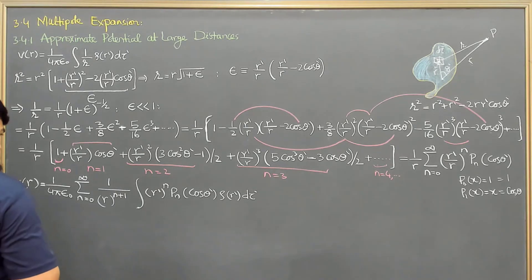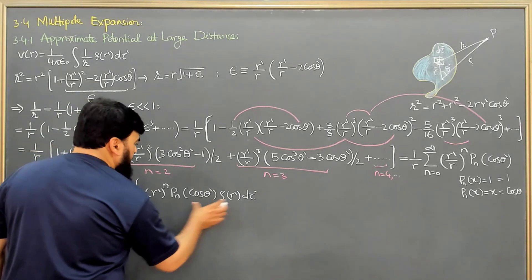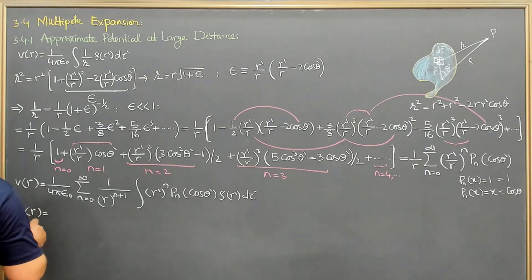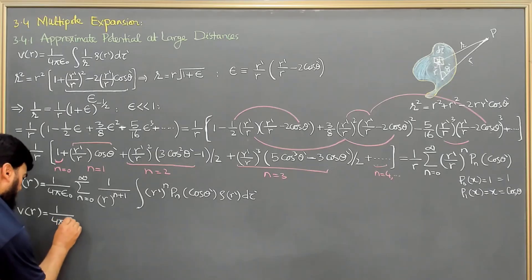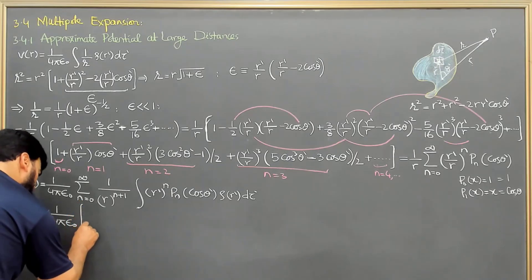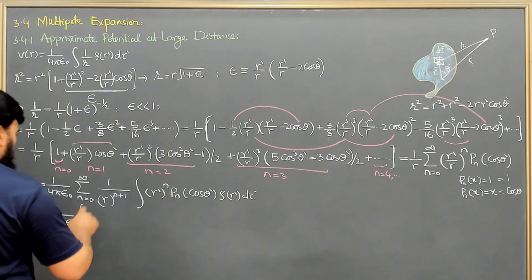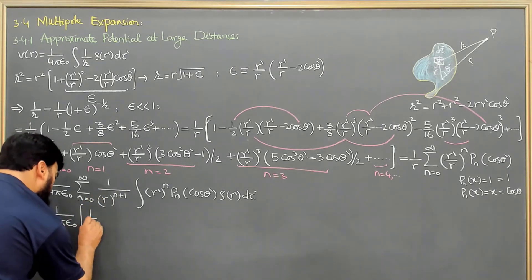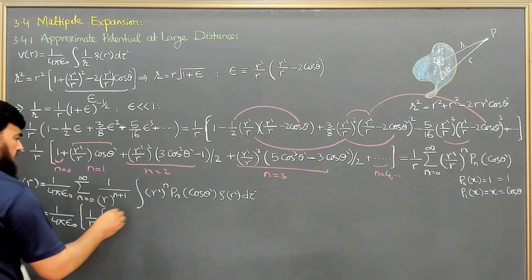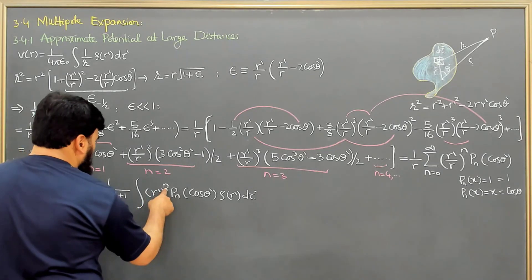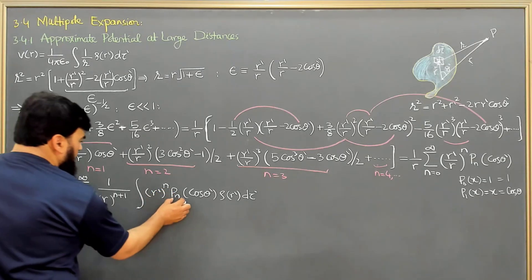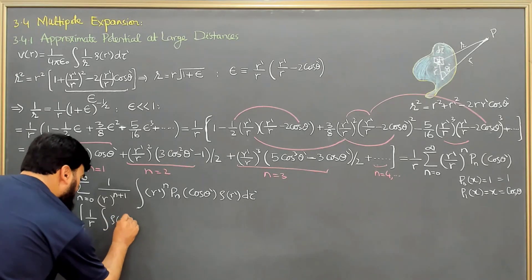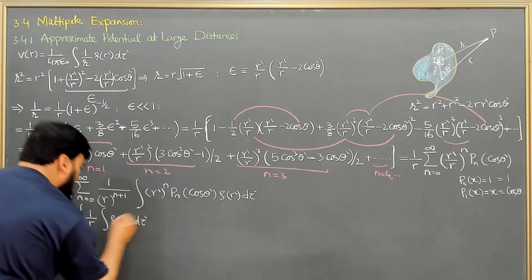Now I can expand this more explicitly. When n equals 0: 1 over r remains, r prime to the power 0 becomes 1, P_0 of cos theta prime equals 1, so we are left with the integral of rho(r prime) d tau prime — this gives us the total charge Q, with the 1 over r dependence.